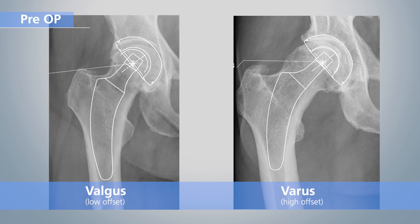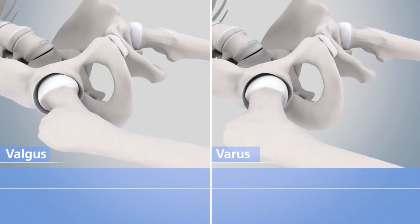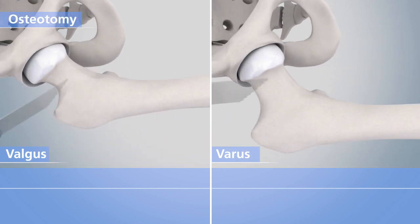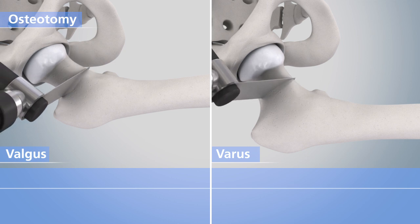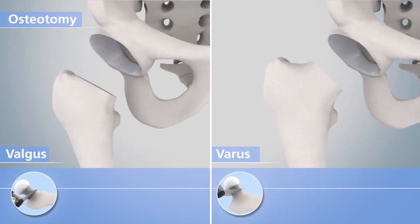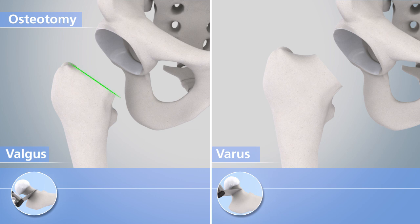The crucial steps of the individualized surgical technique in calcar-guided endoprosthetics are presented, which enables precise implementation of the preoperative planning and reconstruction of a wide variety of hip anatomies in valgus as well as in varus positions. The key step of the implantation technique is an individualized osteotomy of the femoral neck. While in case of a valgus configuration a deep resection is to be performed, a high osteotomy should be selected especially for varus hips, leaving as much femoral neck as possible standing. In most cases, the osteotomy should be done orthograde to the femoral neck axis regardless of the resection level.